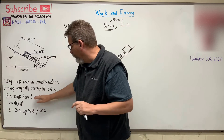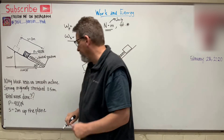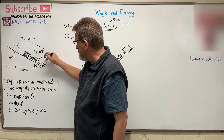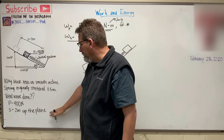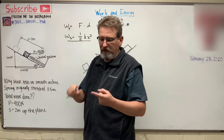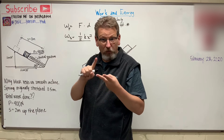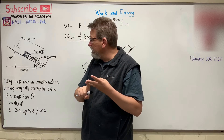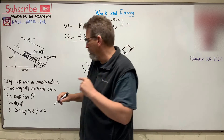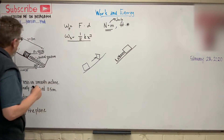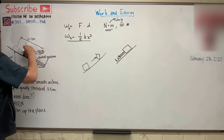We want to find the total work done. The force is 400 newtons, S is the displacement up the block. We're going to look at the work done by the force, the work done by the spring, and the work done by the weight of the block. Let's say the block weighs 10 kilograms. We also need the spring constant, which is k = 30 newtons per meter.